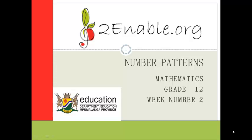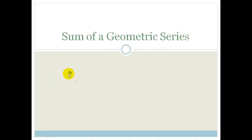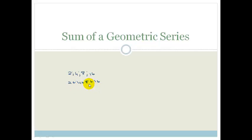Good day grade 12s. Welcome to your next lesson in number patterns. In this lesson we're going to be looking at the sum of a geometric series. Remember, if you have numbers like 2, 4, 8, 16 that is a geometric sequence, but if you go 2 plus 4 plus 8 plus 16 then that is a geometric series because it has pluses in between. As soon as you have pluses between the numbers we can find the sum, but we need to look at the proof of this.